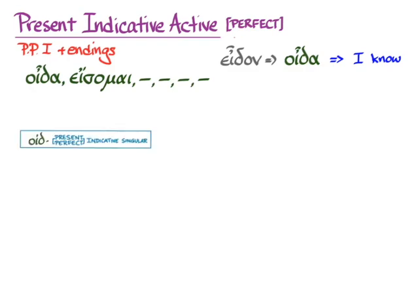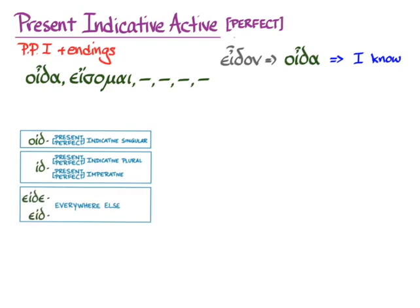We're going to use three different stems: oid for the present, that is to say the perfect in the indicative singular; id for the present, that is to say perfect in the indicative plural; and id in the present, that is to say perfect imperative. And then everywhere else, we're going to use aida or aid.